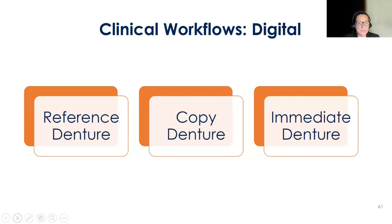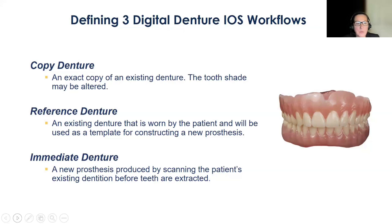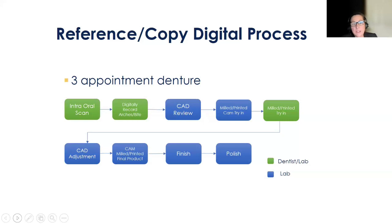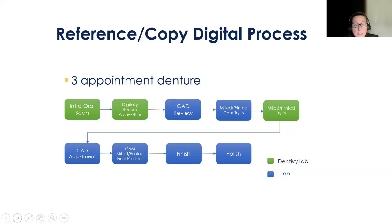The reference denture workflow is where you reline the existing denture with heavy and light body and treat that as your custom tray. The reference/copy denture process is typically three appointments, though some are moving to two. Here's the workflow: you border mold, always use your tray adhesive — if you don't, you'll have poles and it will be difficult to scan. Take their existing denture, do heavy and light or rigid material, perform your muscular movements and squishy-squishies, have the patient close lightly with their existing lower denture, then trim any excess material with a 15 blade so it's not covering the denture teeth. Then you scan it in.